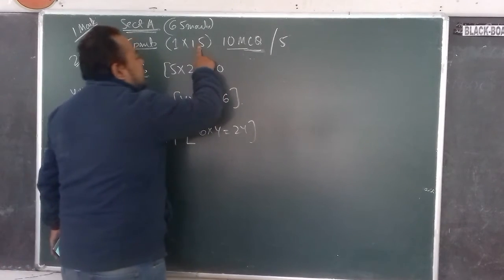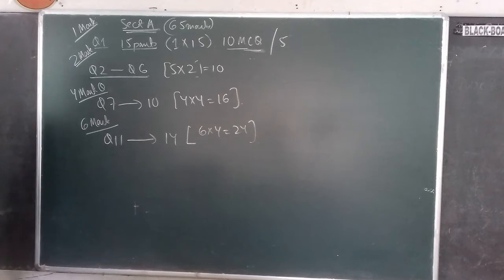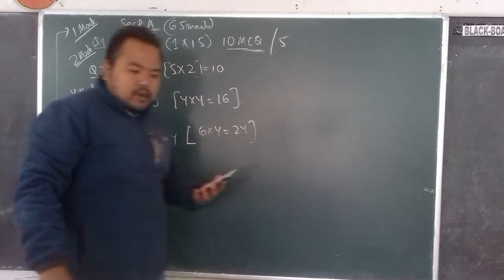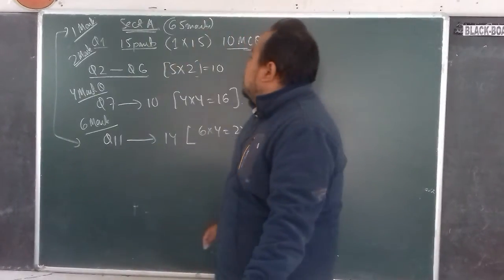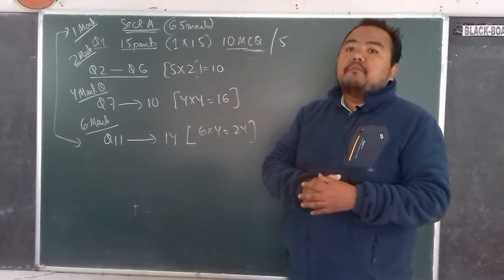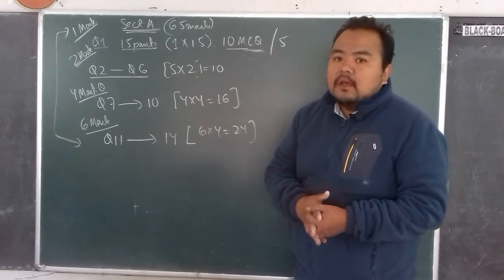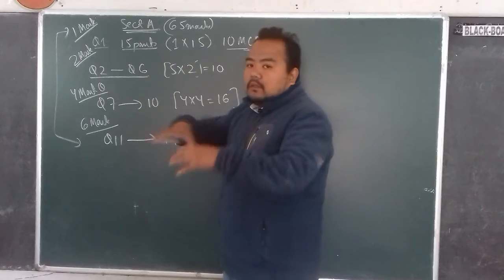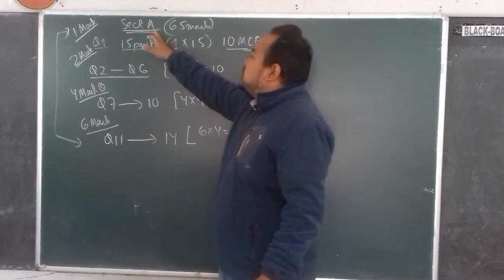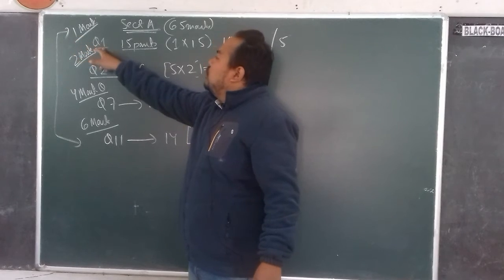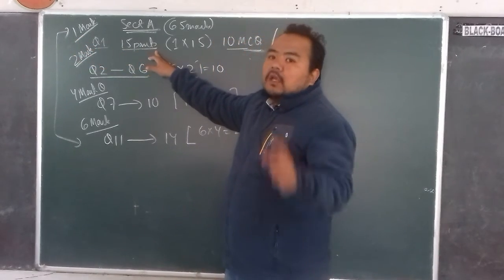This is how your question pattern will look. Section A will be 65 marks and there's a choice between Section B and Section C. Let us first understand the distribution of marks for Section A.